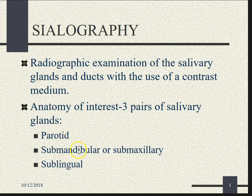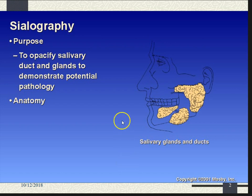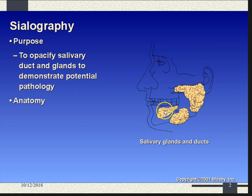The anatomy we're going to look at includes the parotid, the submandibular — also called submaxillary — and then the sublingual. These glands are all paired, so there's one on each side. The big gland in the back is the parotid, down below the mandible is the submandibular, and under the tongue are the sublingual glands — two of them, sitting side by side.